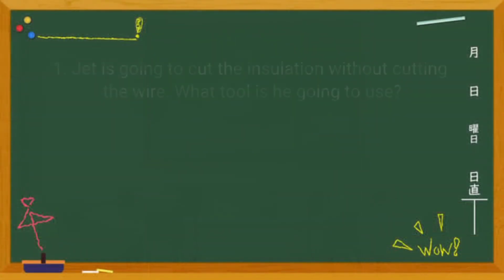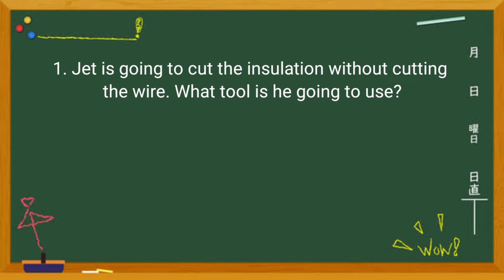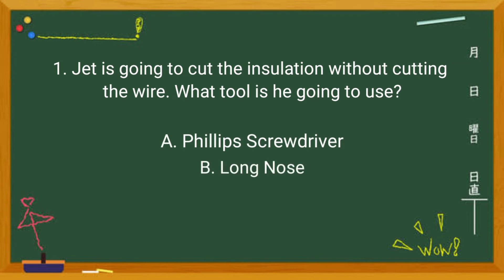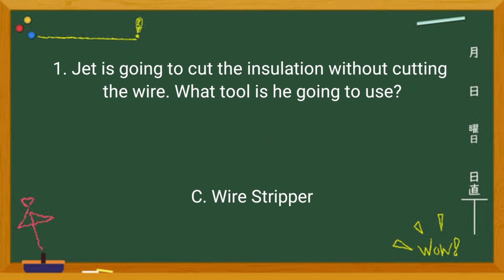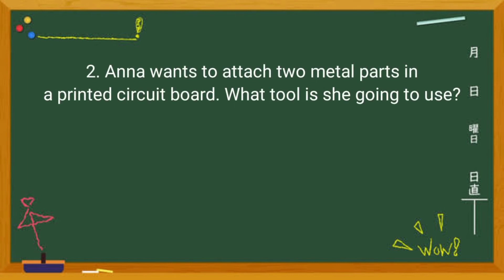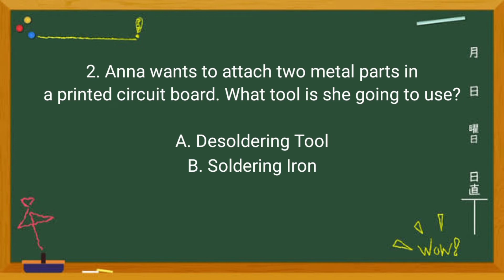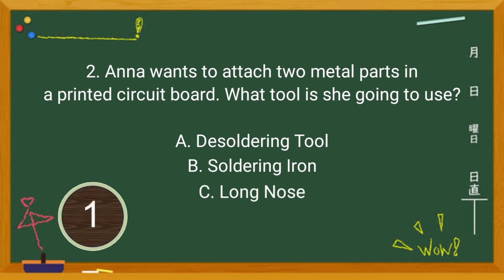Can you already identify the different kinds of basic electronic hand tools? Great! Now, with your pen and paper, answer the following. Number 1: Jet is going to cut the insulation without cutting the wire. What tool is he going to use? You are right if your answer is letter B.